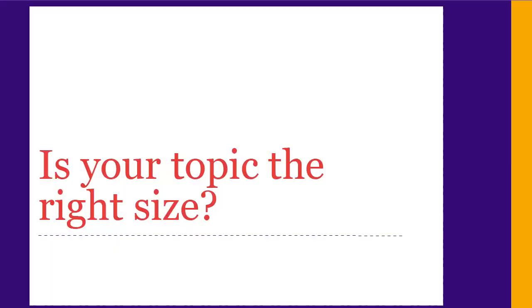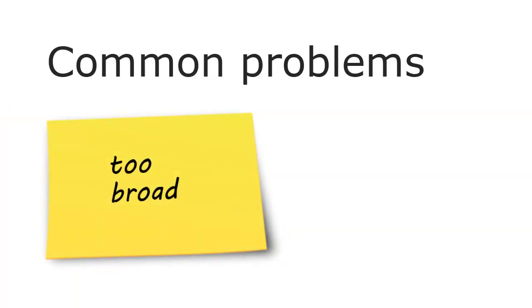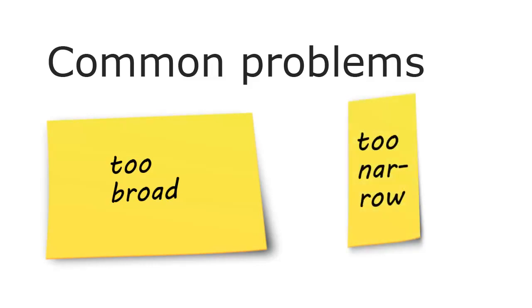Now that you have a workable topic, you need to be sure it's the right size for your paper. People often pick topics that are too broad for the length of paper they have to write. If your topic is too broad, you'll have too much information on too many things and not enough space to cover anything in depth. Other people pick a topic that's too narrow and specific. A narrow topic doesn't give you enough information to work with, and you'll have trouble writing enough. Having a topic that's appropriate for your paper will make things easier and result in a better paper.